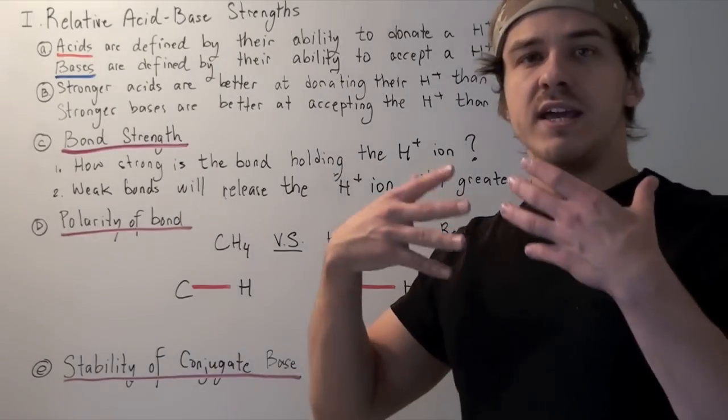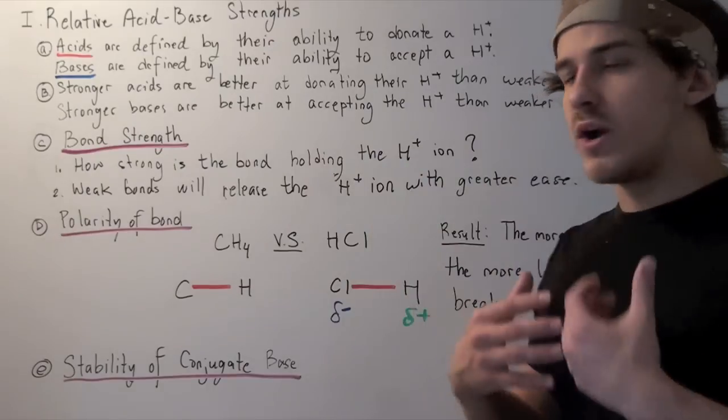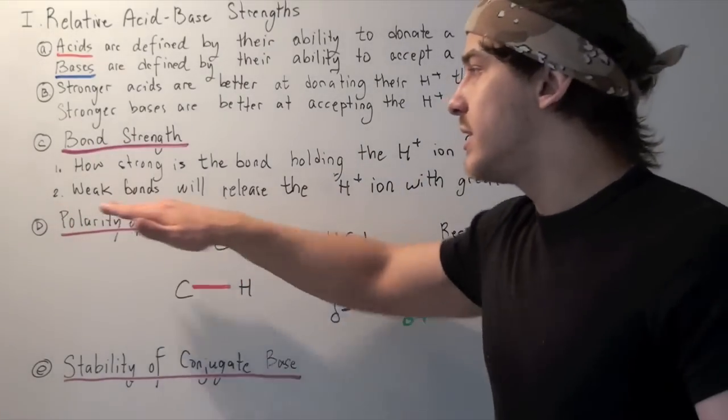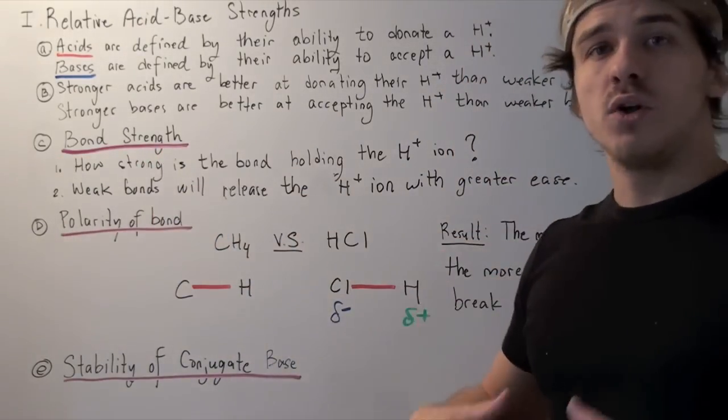The same way that weak bonds will release the H-plus ion with greater ease. So whenever you have a base that comes around, that base will be able to take away that H-plus ion if the bond is weak. Weaker bonds equals better acids.